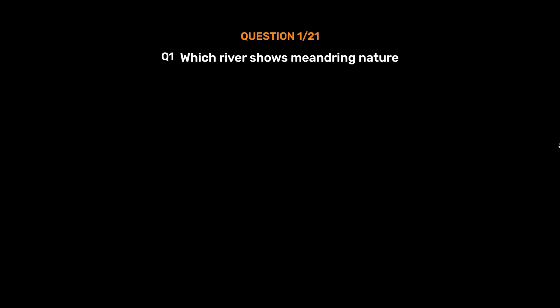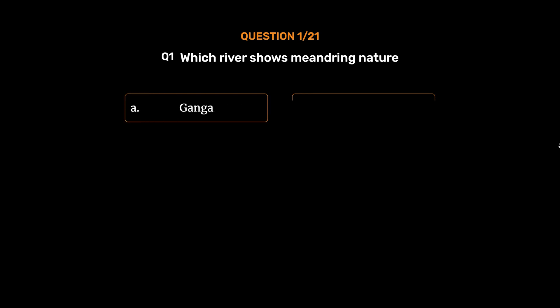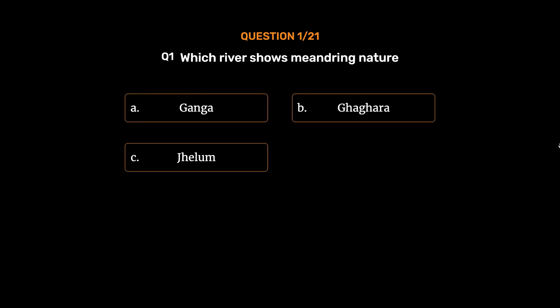Question number 1: Which river shows meandering nature? Option A: Ganga. Option B: Ghagara. Option C: Jhelum. Option D: Ravi. The correct answer is Option C, Jhelum.